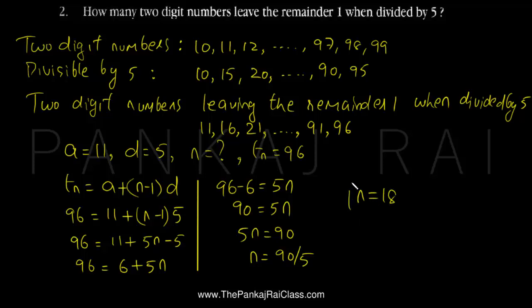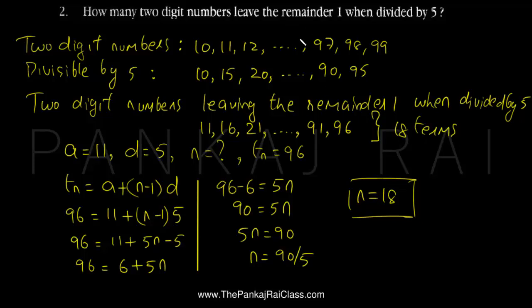So we are having in all 18 terms. There are 18 two-digit numbers which will leave a remainder of 1 when they are divided by 5. That's a very simple question. Thank you very much.